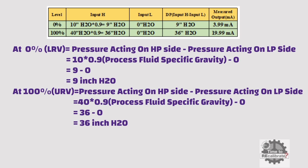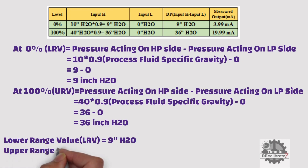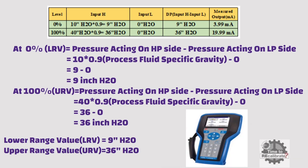Now let's understand the calculation for 100% level. At 100% level, the pressure acting on the high port side is 40 inch H2O, and it is multiplied by the specific gravity of the process fluid, which is 0.9, giving 36 inch H2O. The DP transmitter low side has 0 inch H2O pressure, so the differential pressure is 36 inch H2O at 100% level. In this example, the lower range value is 9 inch H2O and the upper range value is 36 inch H2O. We need to set 9 inch H2O as the lower range value and 36 inch H2O as the upper range value in the DP transmitter using a HART calibrator. In conclusion, level measurement in a closed tank with a dry impulse line always gives a positive calibration range for the DP transmitter.